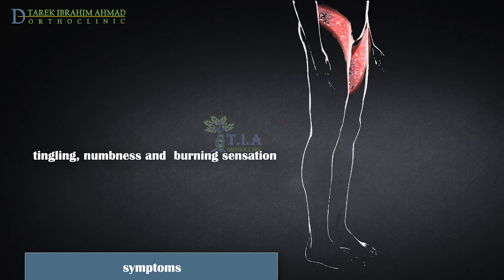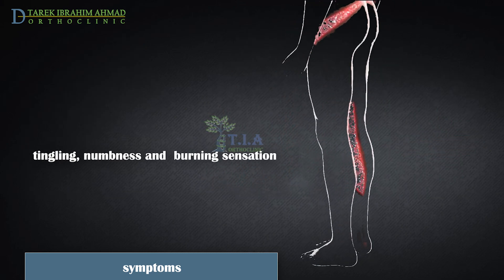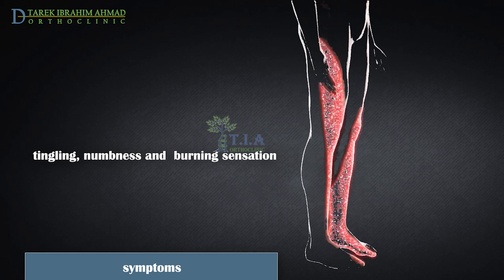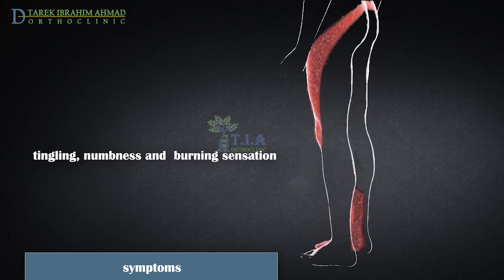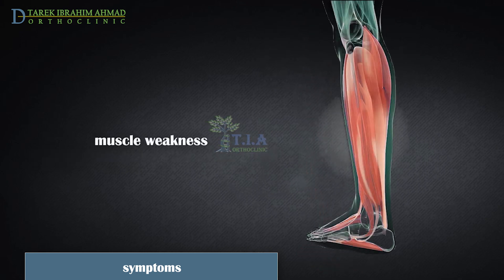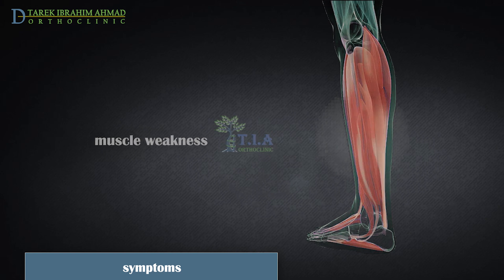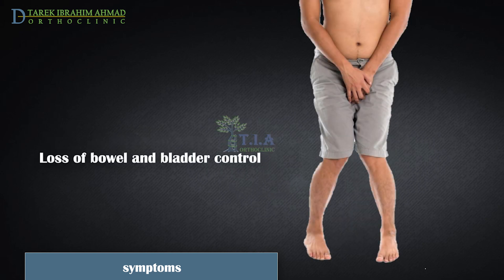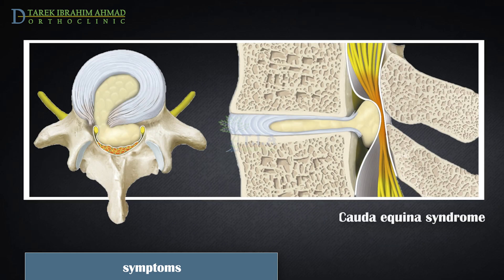People who have a herniated disc often have radiating numbness or tingling in the body part served by the affected nerves. Muscles served by the affected nerves tend to weaken, which can cause you to stumble or affect your ability to lift or hold items. Loss of bladder or bowel control is extremely rare and may indicate a more serious problem called cauda equina syndrome, which requires emergent diagnosis and treatment.